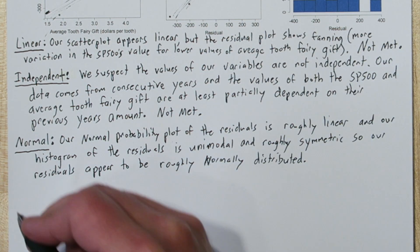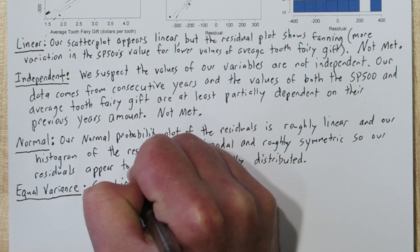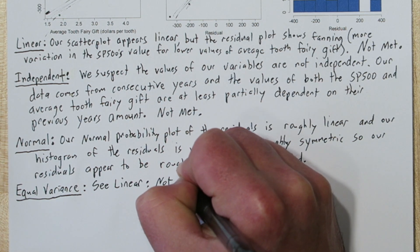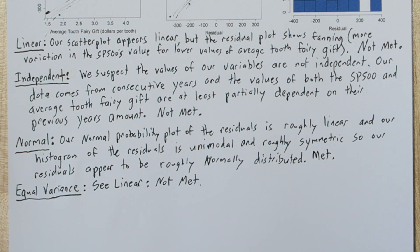For the equal variance condition, we want to look at the residual plot and make sure our residuals are about the same amount for the entire domain. So for each price of average Tooth Fairy gift, do the residuals have about the same spread? Now in our linear condition, we already said there's fanning, so this condition is not met.